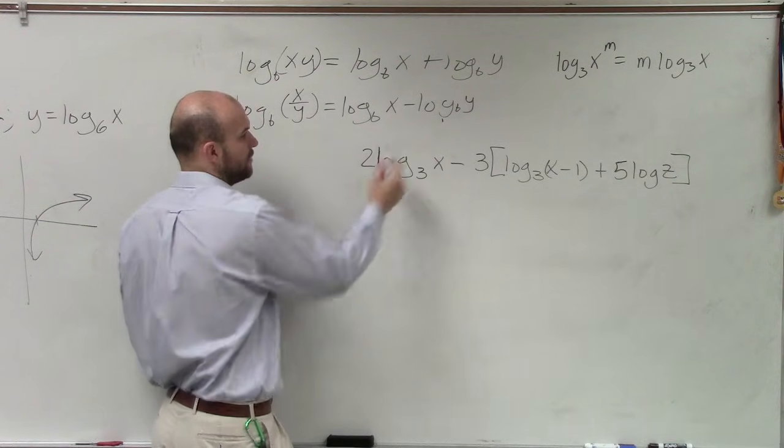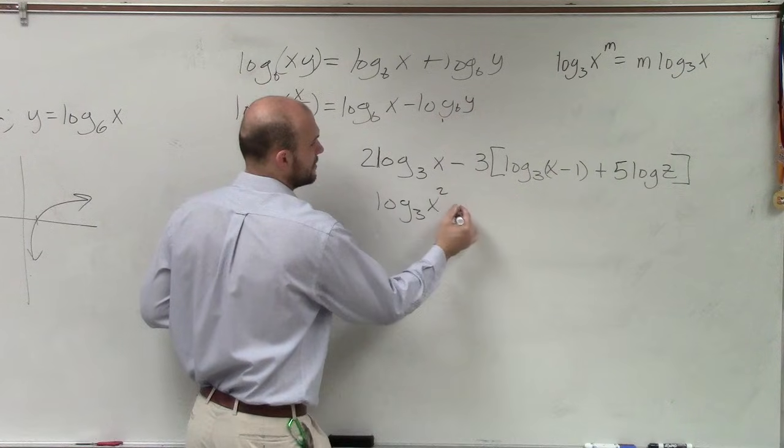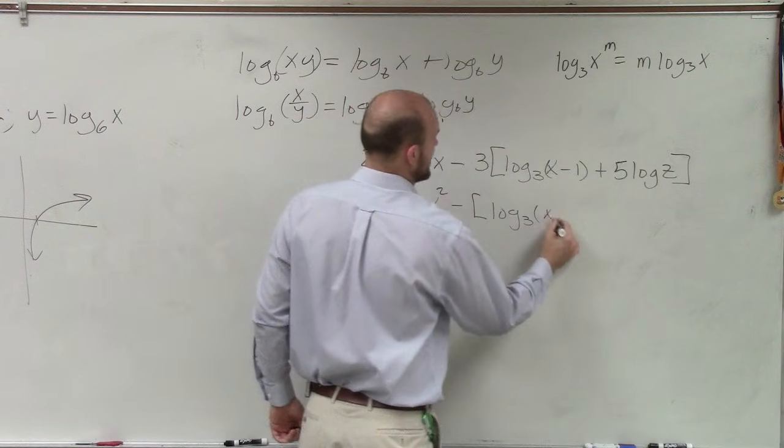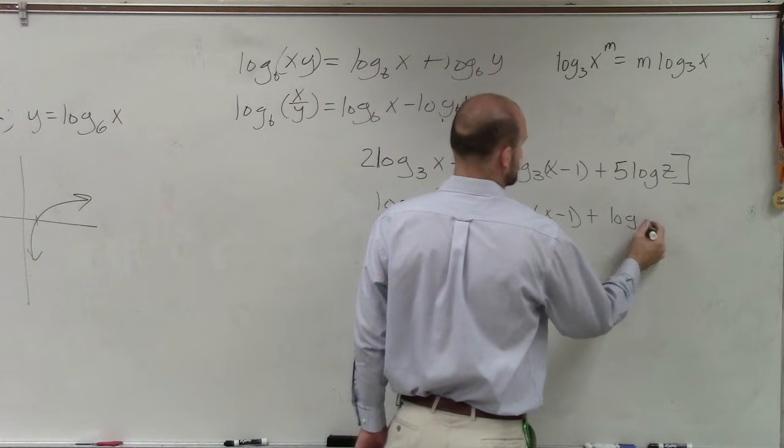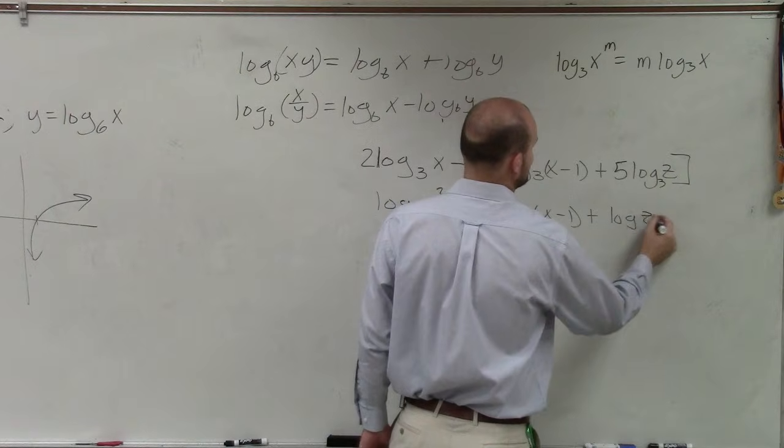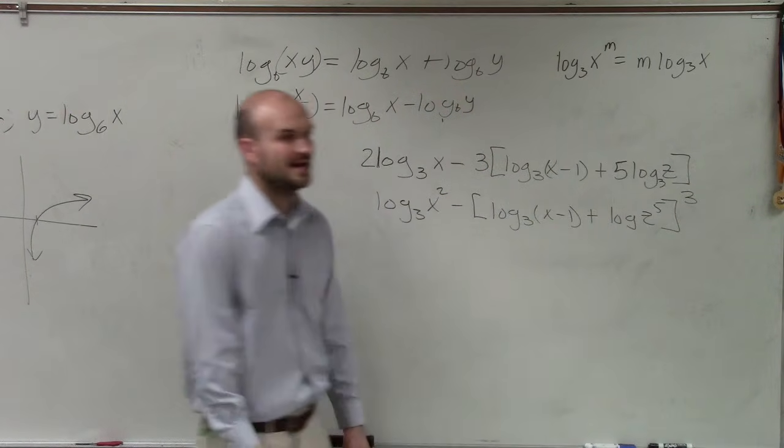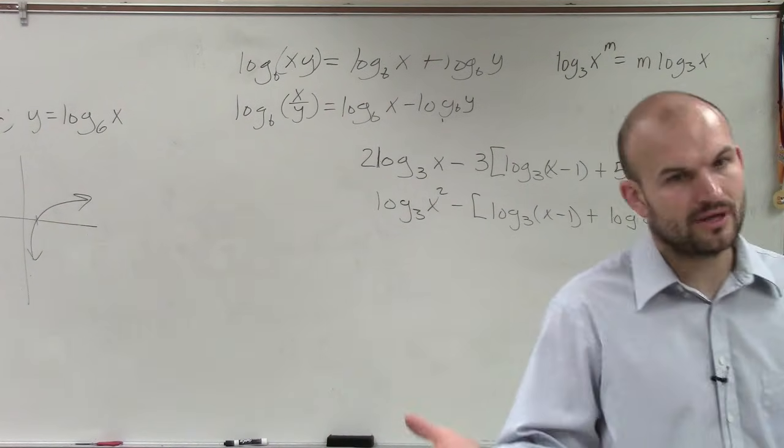So let's go and take a look at all of our exponents. So we can say this is log base 3 of x squared minus log base 3 of x minus 1 plus log base 3 of z to the fifth to the third power. So the first thing I want to do is take all of these and raise them to their powers.